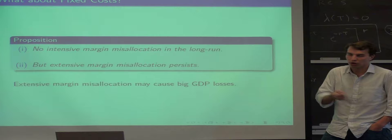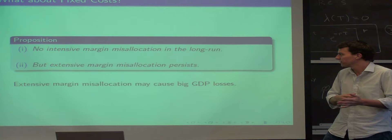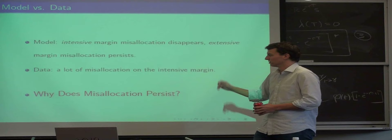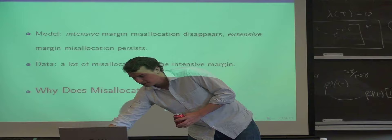This is kind of interesting, because what you are going to be able to get is big GDP and TFP differences because of the wrong guys being in business. So you're kind of halfway there, but the one thing you are not going to get is big intensive margin misallocation, which is something we see in the data. So there's this kind of inconsistency. Why does this misallocation persist?